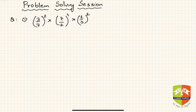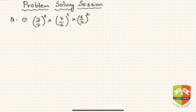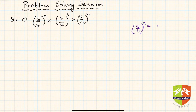Let us begin. The first question: we have to simplify (3/7)² × (7/2)⁴ × (2/3)². The first law I'll be using is: (a/b)ⁿ = aⁿ / bⁿ. Applying this law, we get 3² / 7² multiplied by 7⁴ / 2⁴.